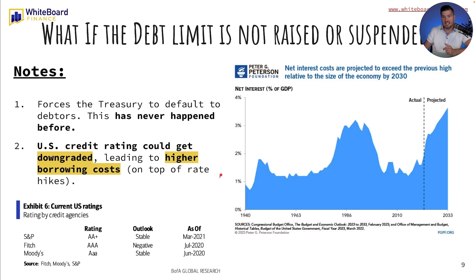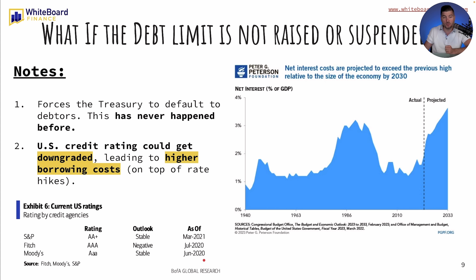So what if the debt limit is not raised or suspended? A failure to address the debt ceiling could result in a downgrade of U.S. credit ratings. Three of the biggest rating agencies are S&P, Fitch, and Moody's. As of early 2021, S&P rated the U.S. at AA+, Fitch at AAA, and Moody's at AAA — stable, negative, and stable respectively. They assess the creditworthiness of governments and corporations, and a downgrade would signal to investors that the U.S. government poses a higher risk of default.